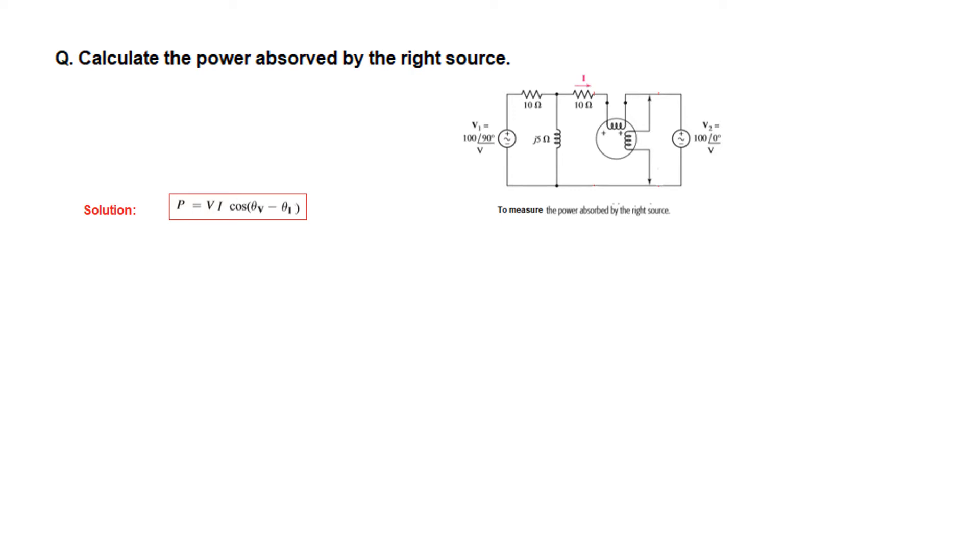Now this formula we'll be using extensively, so keep in mind that for all reactive circuits, the power will be V multiplied by I and multiplied by cosine of the difference between the two angles. So cos(θV - θI). In this case, the power absorbed will be V2, the voltage source, multiplied by current I and cos of the two angles: angle of V2 minus angle of the current I.